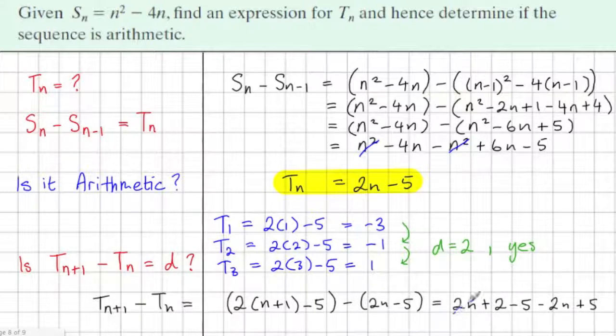And we're going to take away 2n, and minus minus 5 is plus 5. And here we see we have a 2n minus 2n and a minus 5 plus 5, leaving us with just 2.